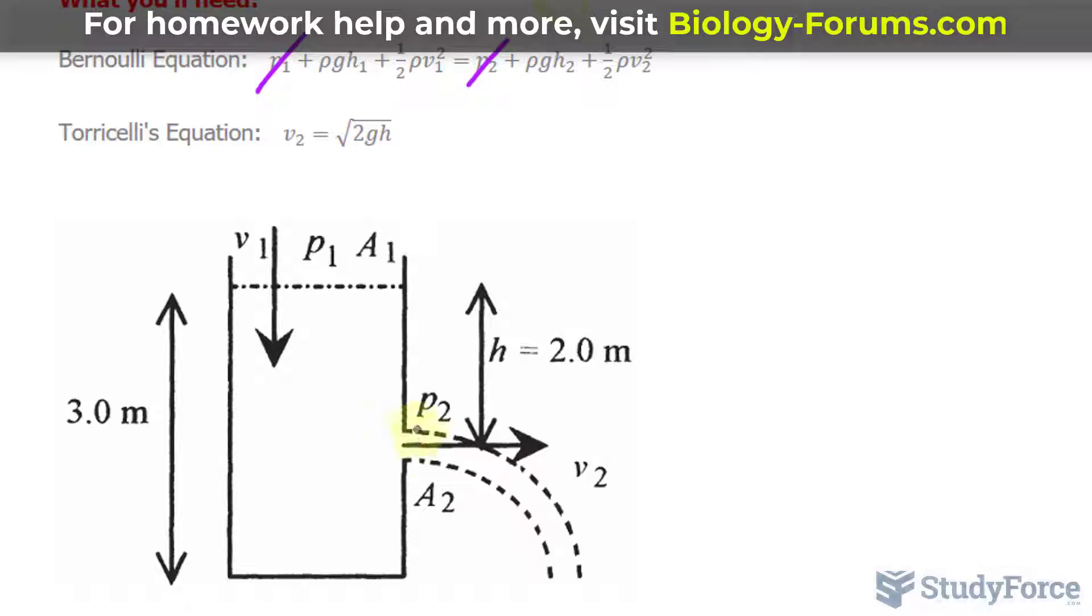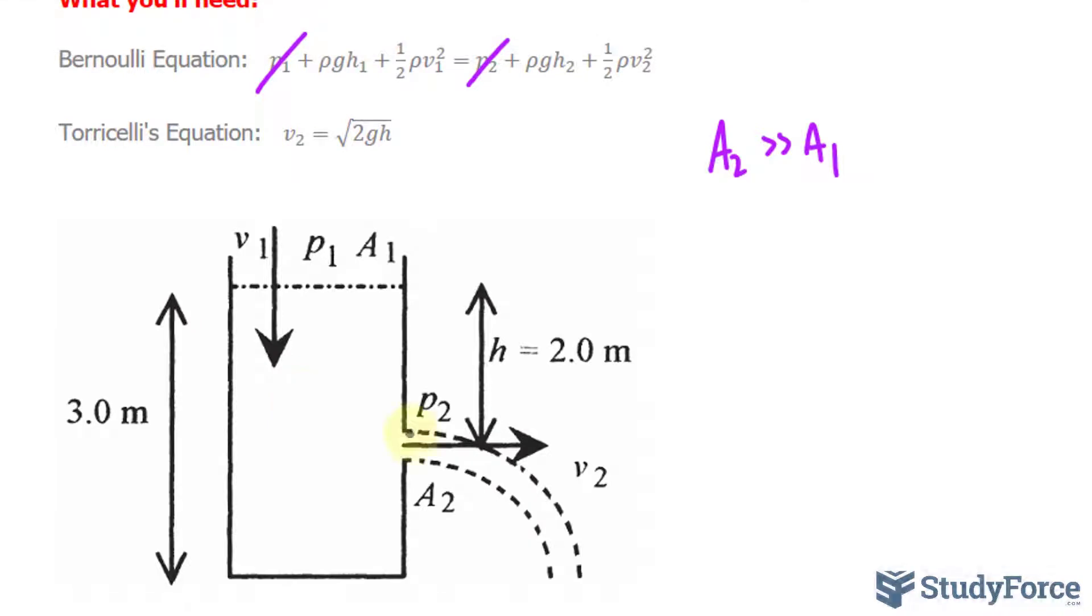Furthermore, because the hole area is so much smaller than the area of the top of the container, A2 is much greater than A1. The speed at which water descends from the top will be almost negligible compared to the speed at which water flows out of the hole. Therefore, we can say V1 equals 0 meters per second, and the justification will be shown later. That makes this term go to 0 because anything times 0 makes 0.